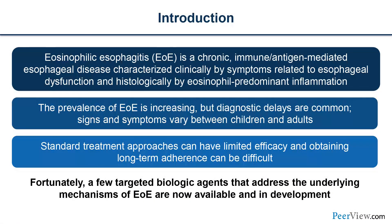Eosinophilic esophagitis is a chronic, immune-antigen-mediated esophageal disease characterized clinically by symptoms related to esophageal dysfunction and histologically by eosinophilic predominant inflammation. The prevalence of EOE is increasing, but diagnostic delays are common, and signs and symptoms vary between children and adults. Standard treatment approaches can have limited efficacy, and obtaining long-term adherence can be difficult. Fortunately, a few targeted biologic agents that address the underlying mechanisms of EOE are now available and in development.